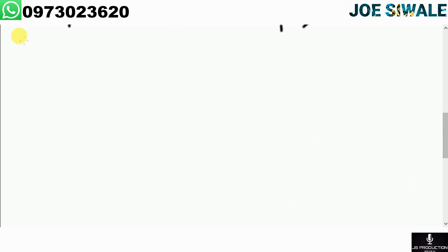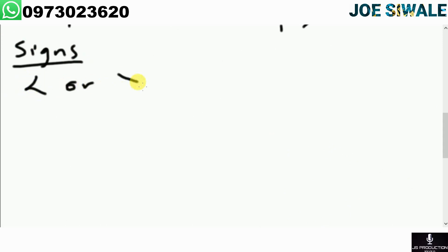Let us now look at the types of signs. The types of signs you can have are: less than, greater than, less than or equal to, or greater than or equal to.